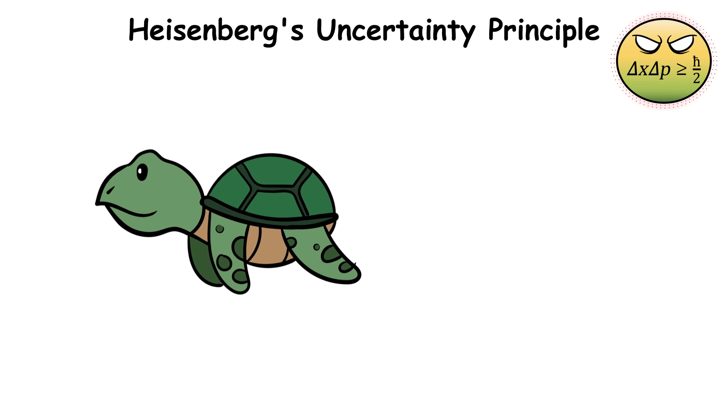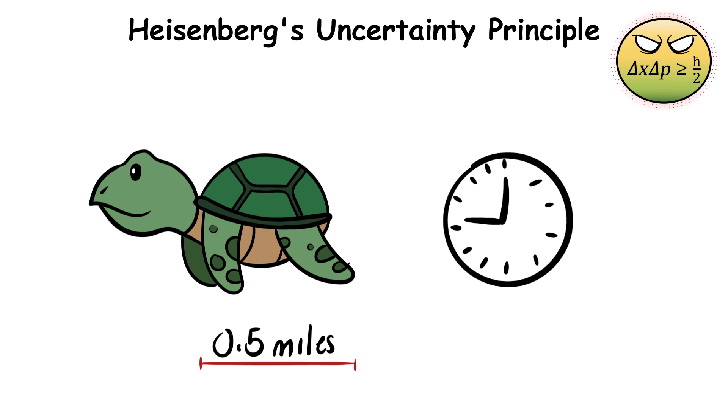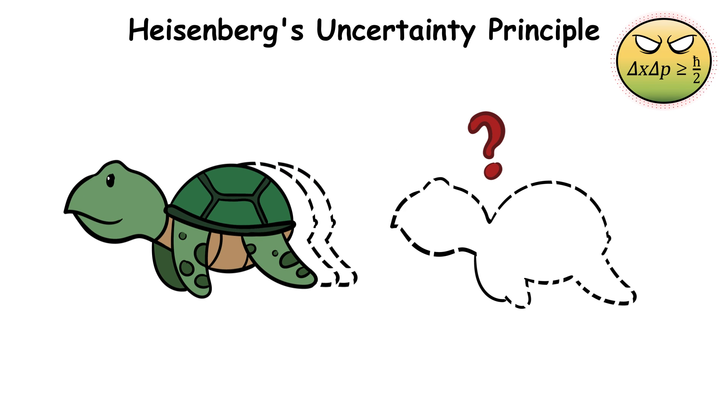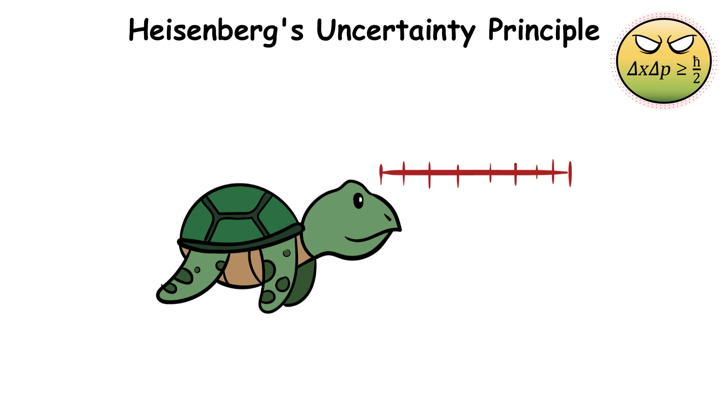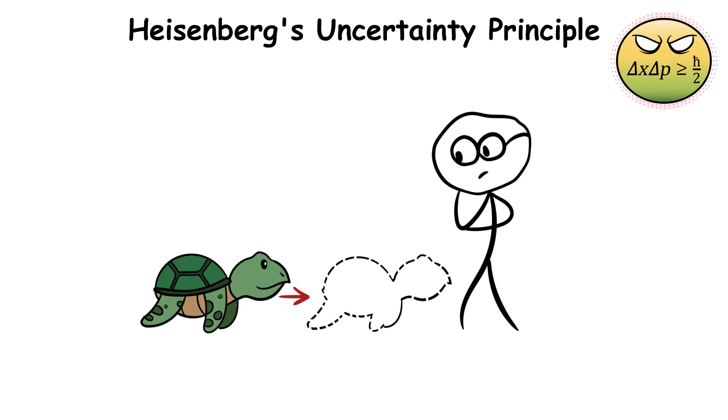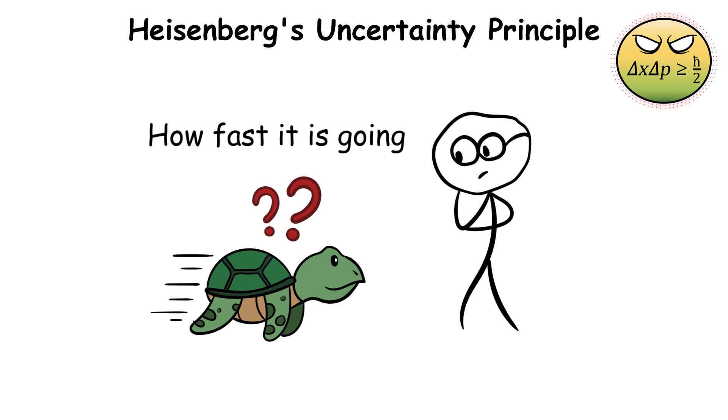So if we measure a tortoise moving at 0.5 miles per hour, we know its momentum, but not its exact position, because it is now in a constant state of motion. But if we measure its exact location, we won't be able to get its exact speed, because we are now focused on where it is, rather than how fast it is going.